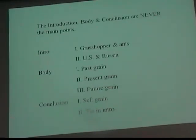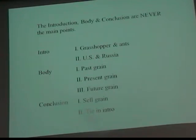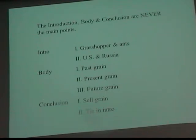This is a sample of the outline of the practice speech I gave you as an example of a current event outline. The introduction was the grasshopper infestations in the U.S. and Russia. The conclusion was that we should sell grain, and then I tie it back to the grasshopper problem. But all I really need for my assignment is the body of the speech — past, present, and future — a time outline about grain problems. Introduction, body, and conclusion are never Roman numerals one, two, and three. If you put them anywhere, they're just identification of what part of the speech you're on — don't use them as main points.